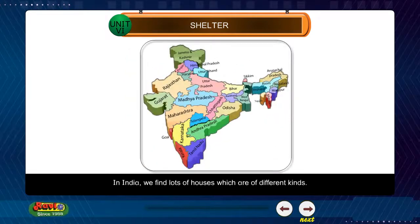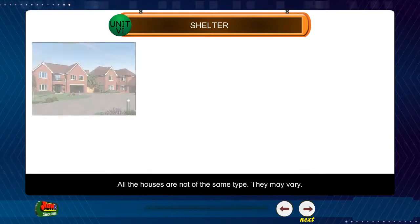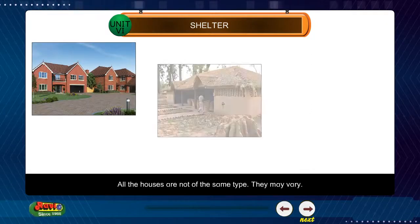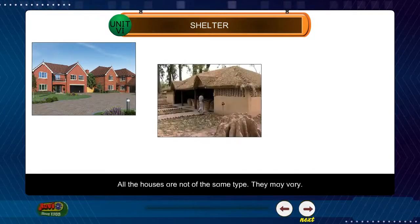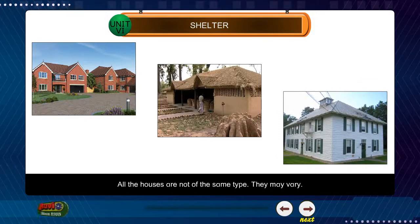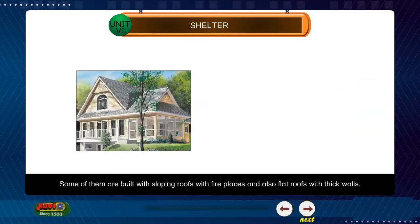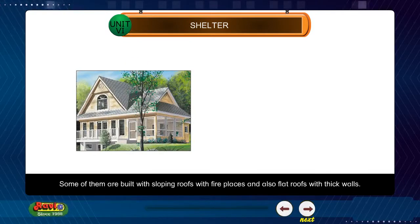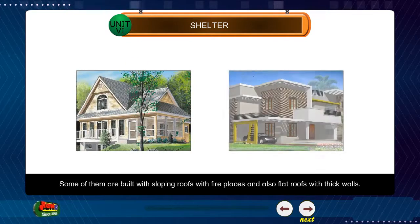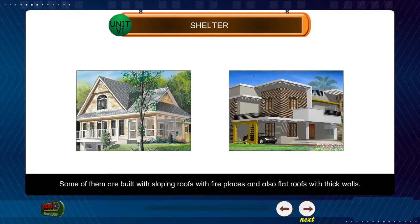In India, we find lots of houses which are of different kinds. All the houses are not of the same type. They may vary. Some of them are built with sloping roofs, with fireplaces and also flat roofs with thick walls.